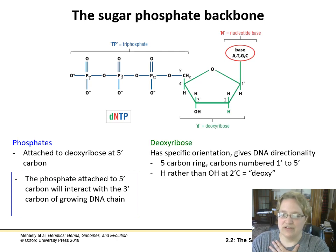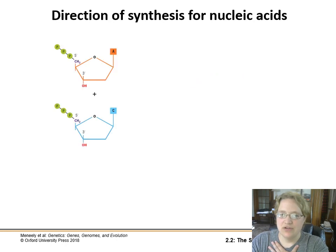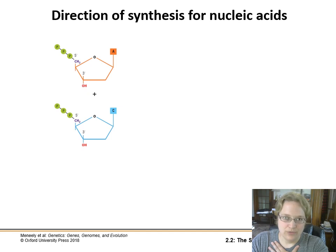This deoxyribose has a specific orientation — numbered carbons one through five. What makes deoxyribose 'deoxy' is the absence of an oxygen at the 2' carbon; if it were ribose sugar, it would have an oxygen there. When we talk about how DNA is synthesized in replication, there's a directionality to it — we talk about the 3' and 5' ends, referring to whether it's the 3' carbon or the 5' carbon on the ribose sugar at each end.